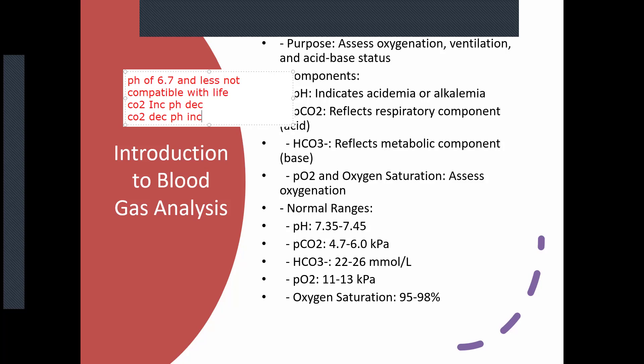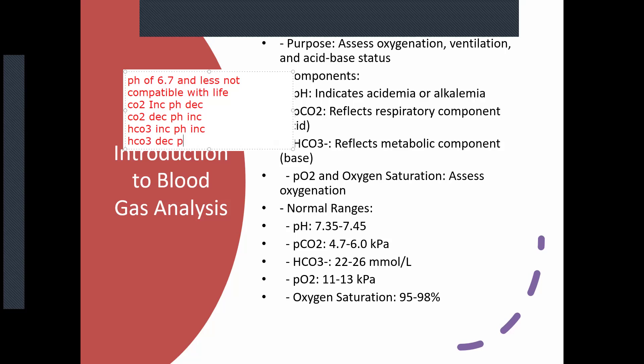Bicarbonate is manufactured in your kidneys and represents your base or alkali component. It's how your body helps move away from acidosis. For bicarb and pH, as HCO3 increases, pH also increases, and as bicarb decreases, pH also decreases. That relationship between CO2, bicarb, and pH is probably the first thing we assess when looking at a blood gas.